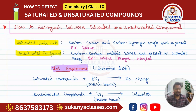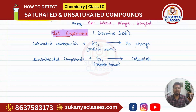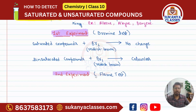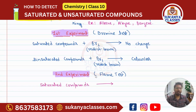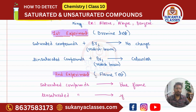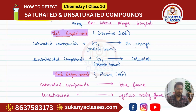Now another method is here. If we do the flame test, then also we can predict whether it is a saturated or an unsaturated compound. So the second experiment is the flame test. In a flame test, if we take saturated compounds, it will give a blue flame. If it is producing a blue flame, it must be a saturated compound. And if we take an unsaturated compound in a flame, it will give a yellow flame. So by these two experiments, we can easily understand how to distinguish between saturated and unsaturated compounds.